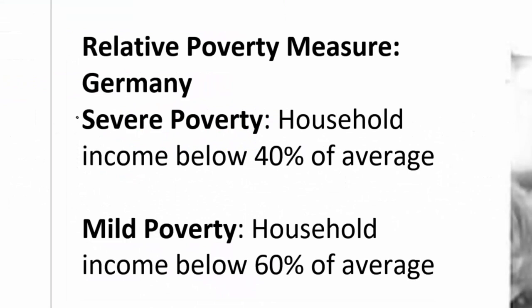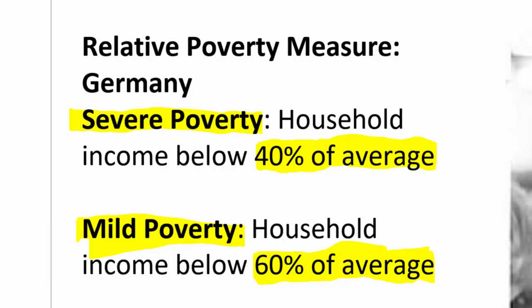In Germany, they typically talk about a household being in severe poverty if the household's income is below 40% of the average income for a household of that size, or mild poverty if a household's income is below 60% of the average. This means that unless all households of a given size earn the same amount, there are always going to be some households in poverty. Even if the average household earns a lot of money, there will still be some households earning 40% or 60% of that average, making it more or less impossible to eliminate poverty with a relative measure.